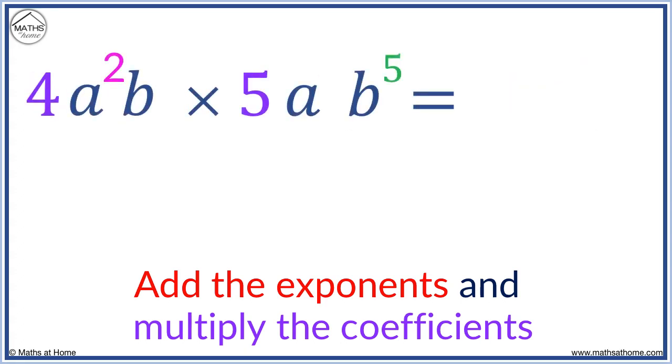In this example, we can write in the secret exponents of 1. 4 times 5 equals 20. 2 plus 1 equals 3, so a cubed. And in the b terms, 1 plus 5 equals 6.